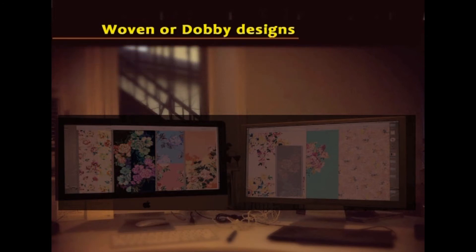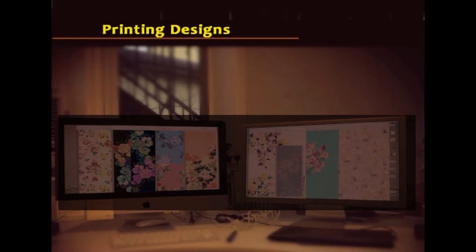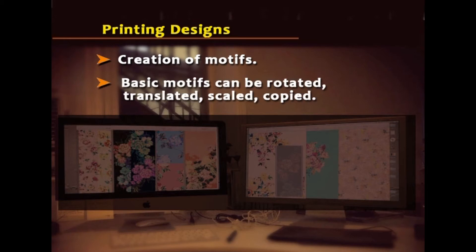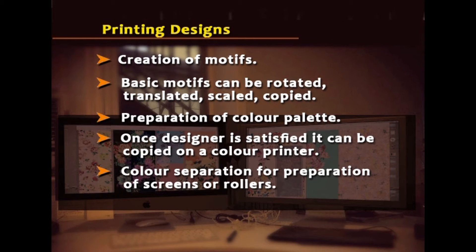In the woven dobby design module, the pattern has to be formed and then the fabric design or fabric formation has to be assigned. For printing designs — for prints, silk screen printing and all — the modules involve creation of motifs, where basic motifs can be rotated, translated, scaled and copied. Preparation of colour palette follows, and once the designer is satisfied it can be copied on a colour printer. Colour separation for preparation of screens or rollers and analysis of designs for printing are also included.